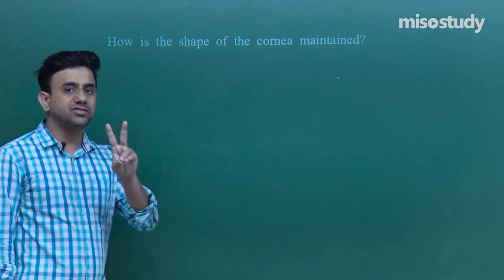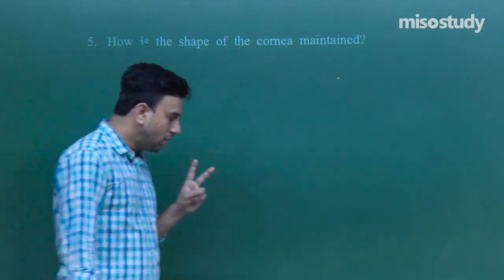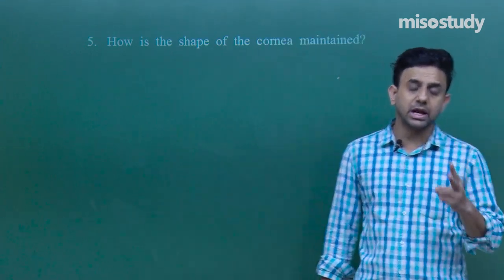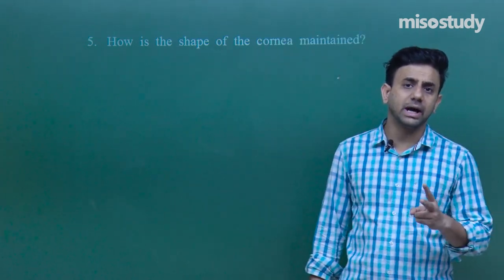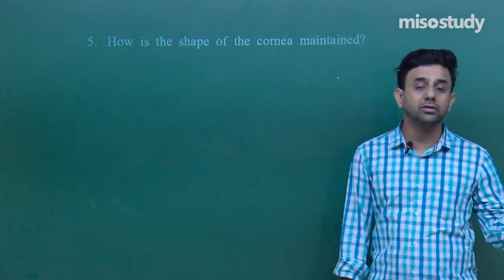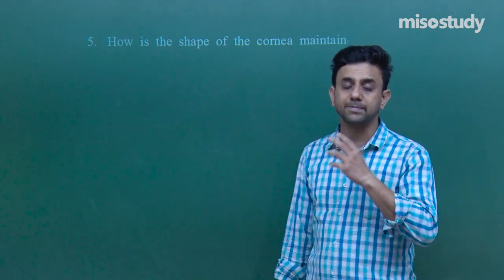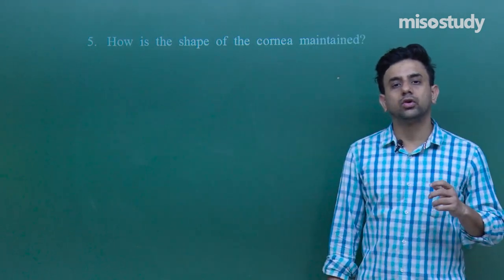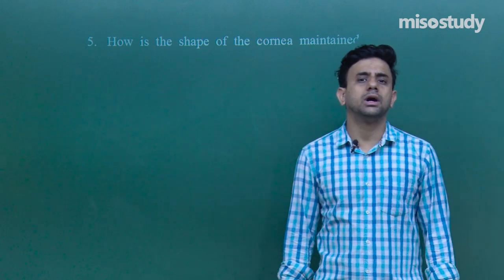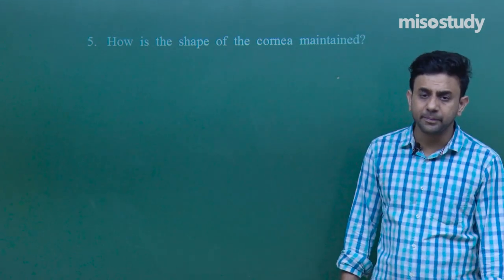We know that the eye has two types of liquids. There are two chambers in the eye: the aqueous chamber containing aqueous humor, and the vitreous chamber containing vitreous humor. Our body and its various organs are remarkable structures.